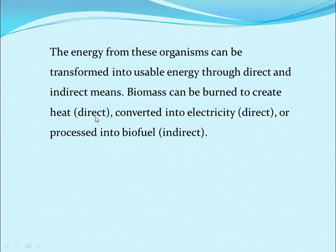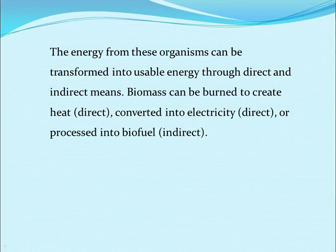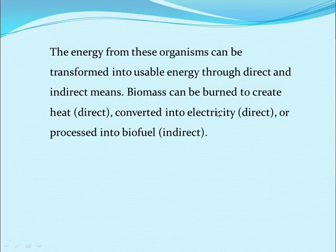For the direct method, biomass is used to generate heat, and from that, electricity is generated which is used in cities and for lighting. This is similar to solar cells which generate electricity from sunlight, but here we use biomass and waste instead. If we use biomass to create biofuel — which we call fuel cells — that is the indirect method.